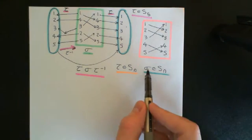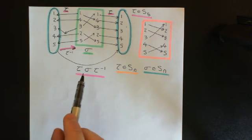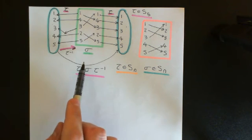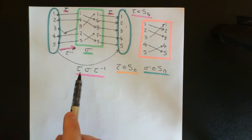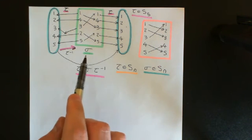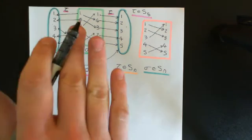So if we have σ, which is some element of the symmetric group on the set of n elements, and some other element τ which is also an element of S_n, and you want to conjugate σ by τ, what that actually means is you are modifying σ by relabeling the domain and codomain according to the mapping τ. You'll turn it into some other permutation of the same cycle type.